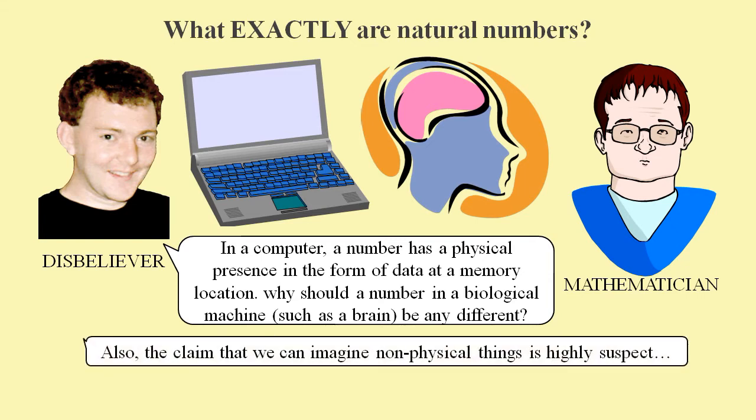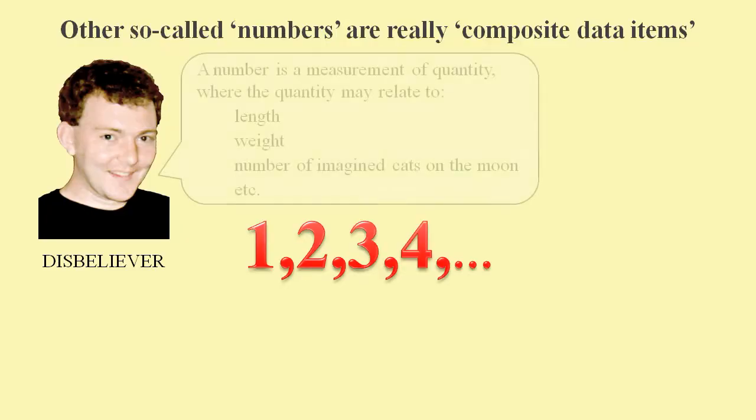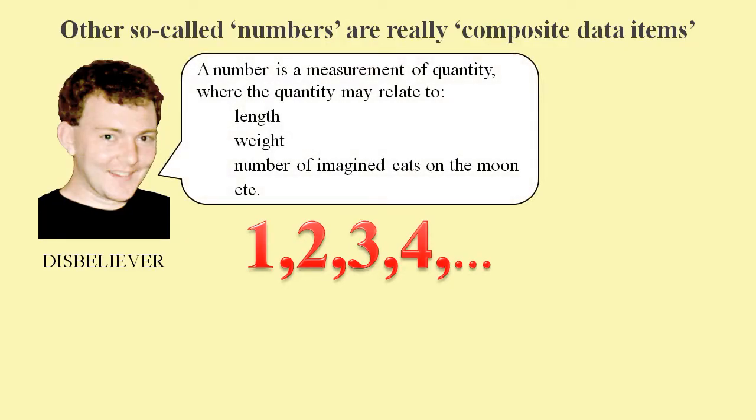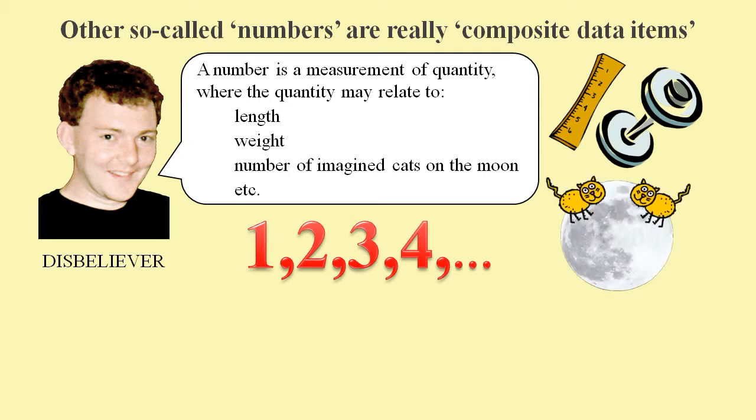So the obvious thing for a number to be is a piece of data within the brain. Disbelievers can see no reason to believe that numbers are beyond physical reality and that we can somehow imagine these non-existent things. A number forms part of our description of something, such as a length, a weight, an amount of imagined cats on the moon, and so on.